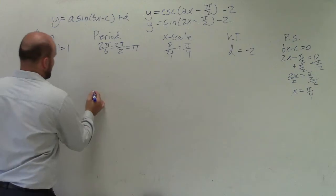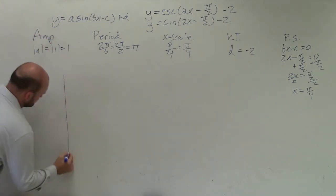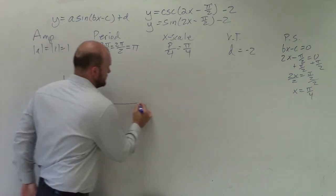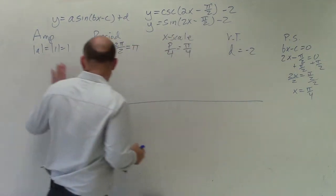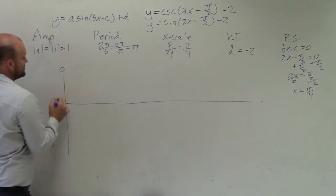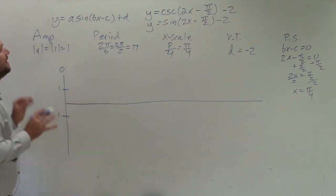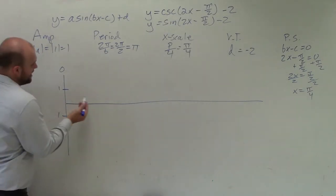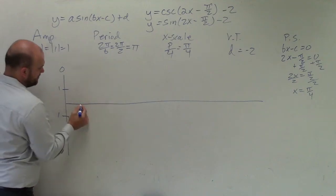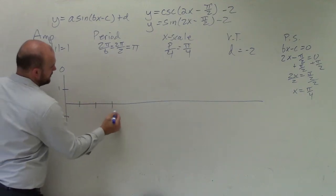Let's start at pi halves. Let's pretend here's 0. Now, we know that amplitude's up 1, down 1. So I'm going to say up 1, down 1. And then we have a scale of pi over 4. 1, 2, 3, 4.